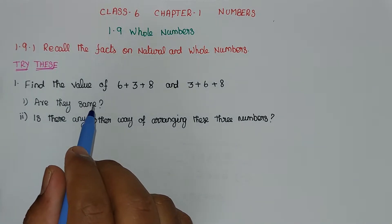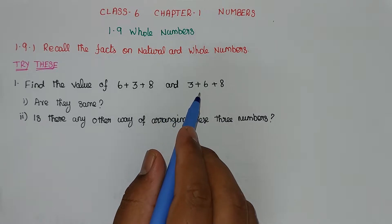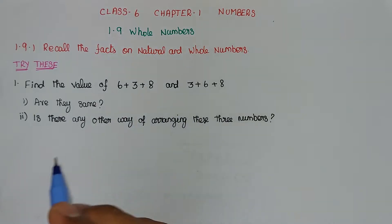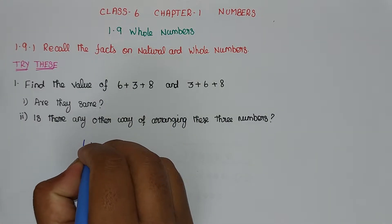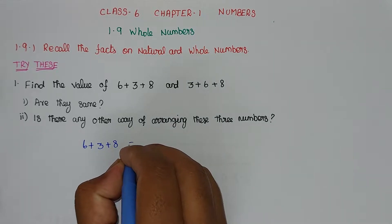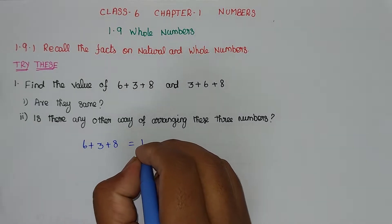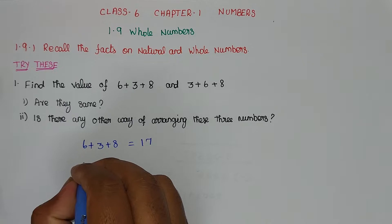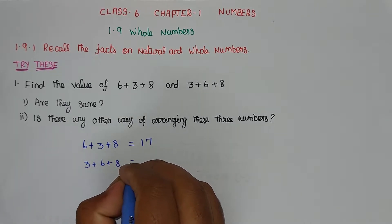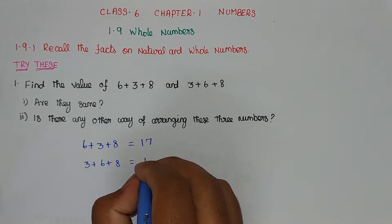Problem number 1. Find the value of 6 plus 3 plus 8, and 3 plus 6 plus 8. The value of 6 plus 3 plus 8: 6 plus 3 equals 9, and 9 plus 8 equals 17. For 3 plus 6 plus 8: 3 plus 6 equals 9, and 9 plus 8 equals 17.